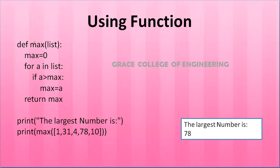This iteration continues until the end of the list. After processing all elements including 10, the result is produced. The largest number is 78. I hope you all understood what methods are used to find the largest number in the list.